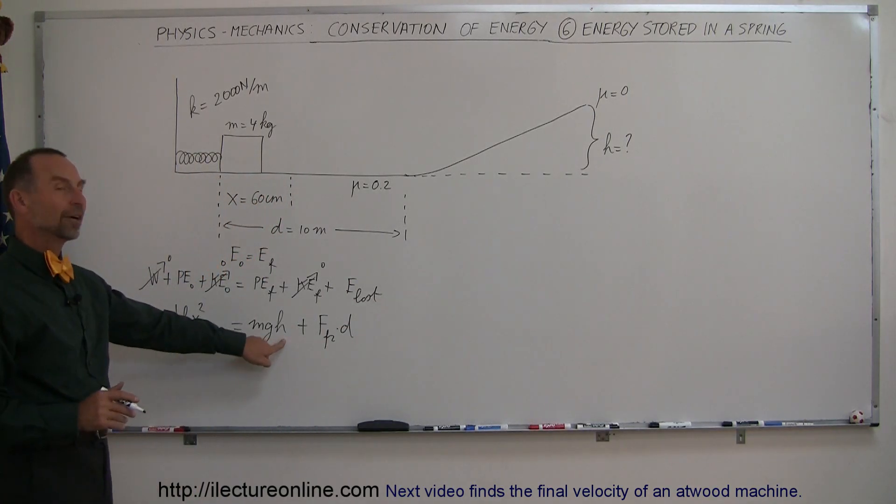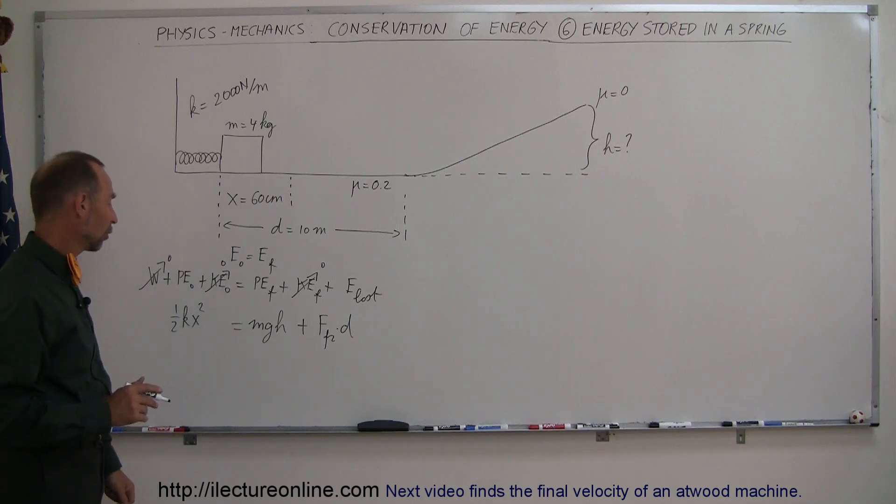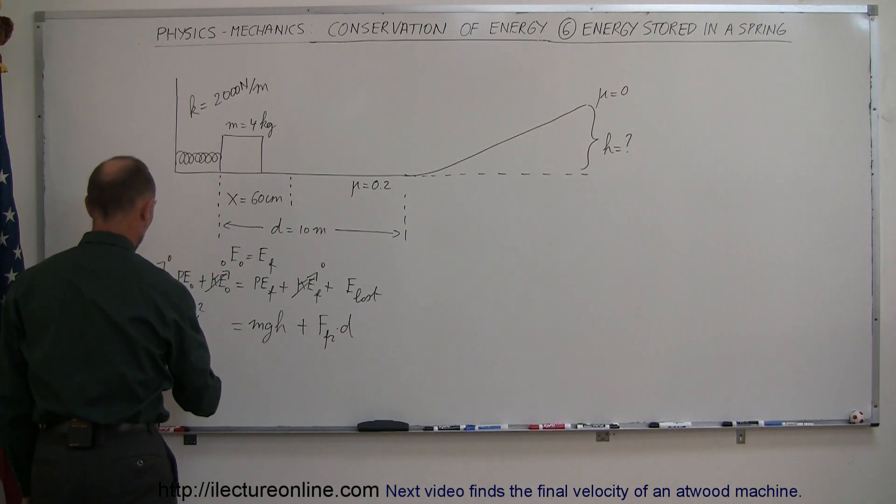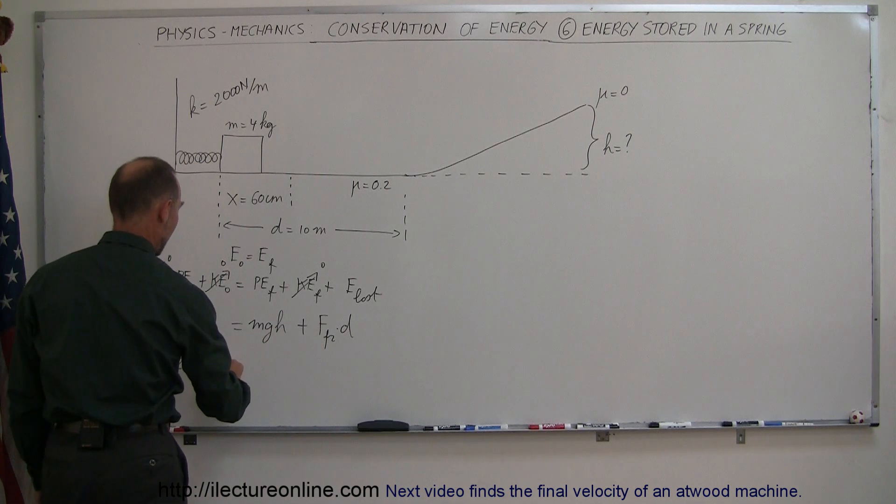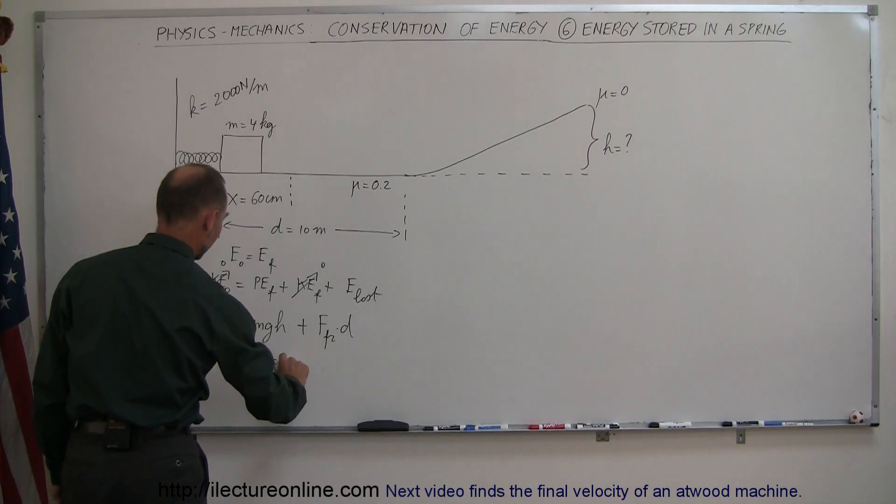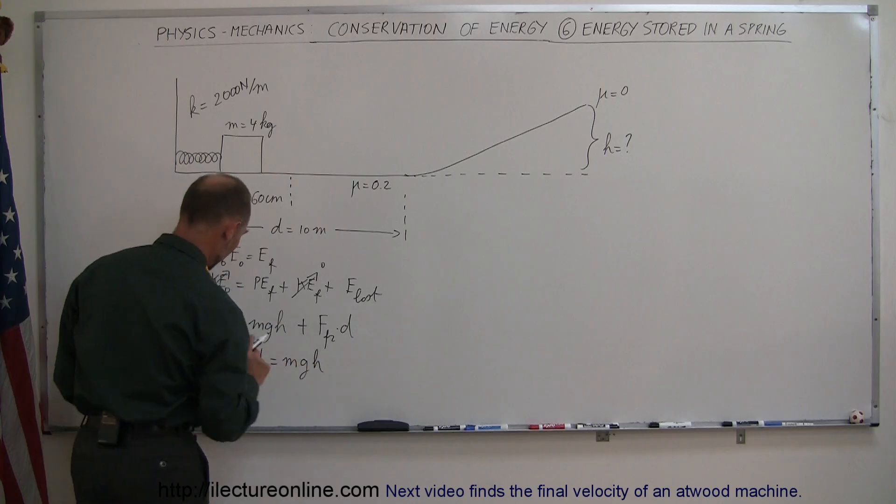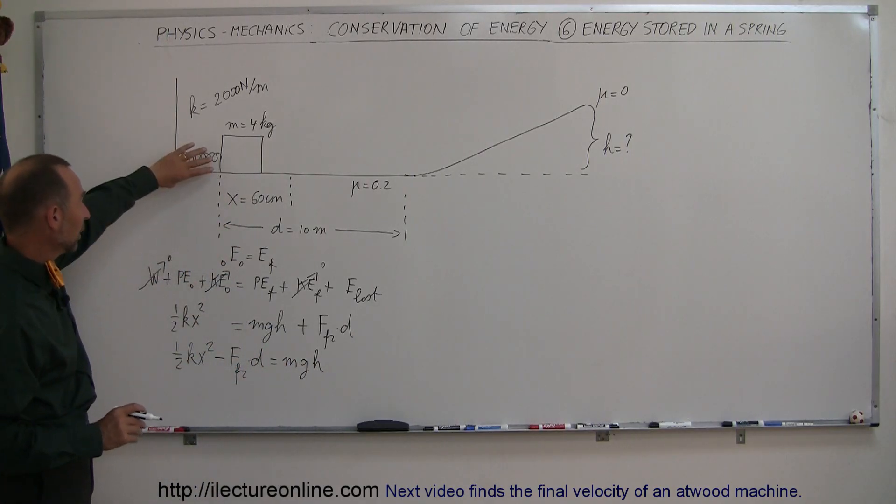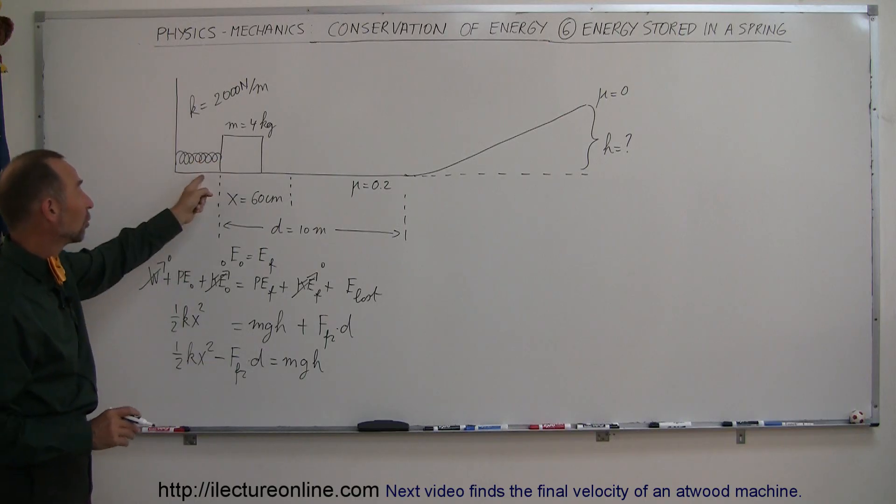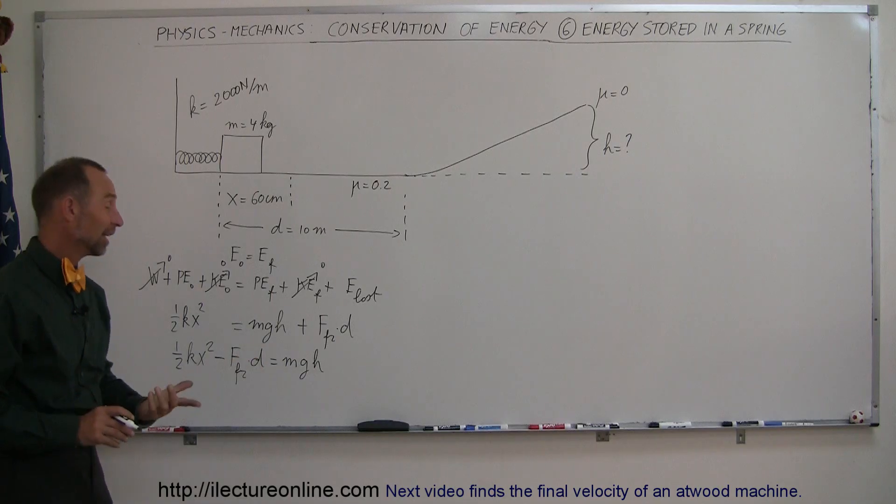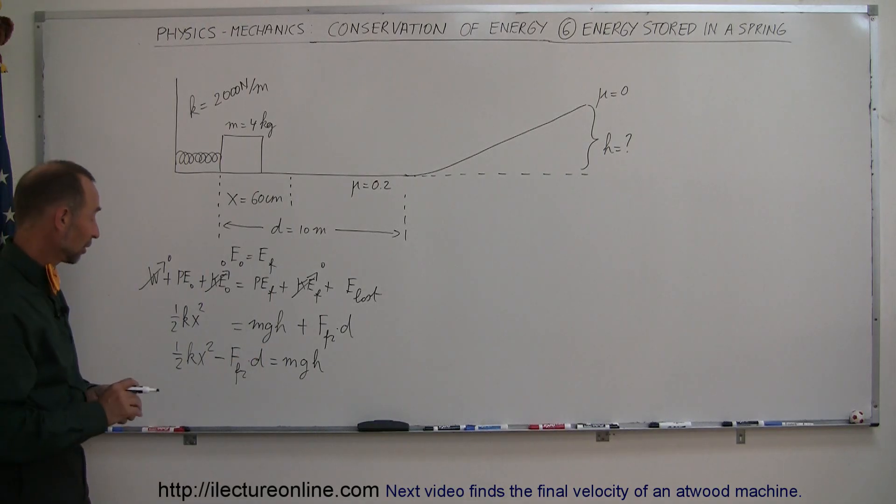What are we looking for? We're looking for h, so we have to solve this equation for h. We can go ahead and do that by moving this over to the other side. So we have one-half kx squared minus force friction times distance equals mgh. Notice any energy that was stored in the spring, which will be given to the block, minus the energy required to overcome the friction will equal the final potential energy that it has. So that makes a lot of sense when you look at it like that.